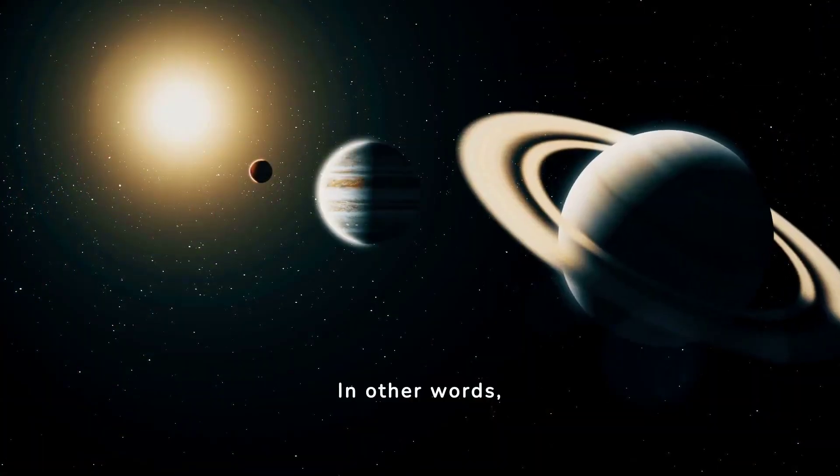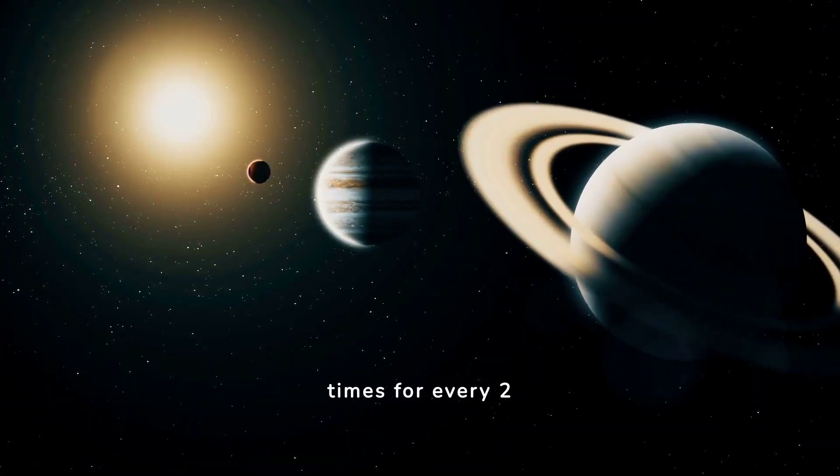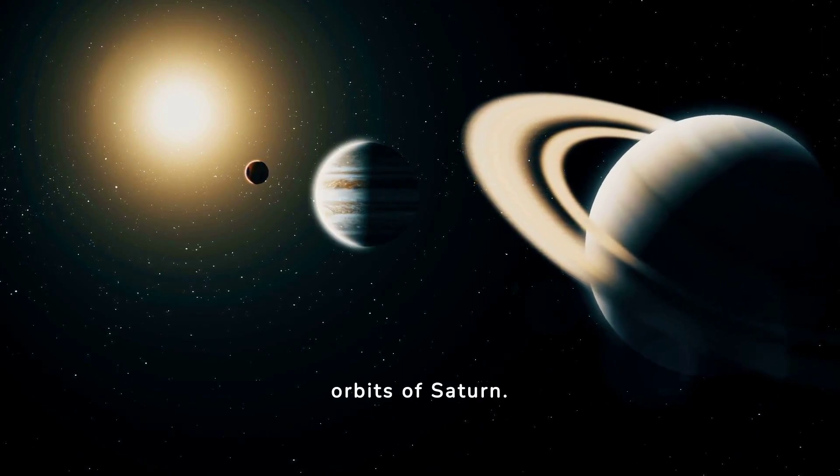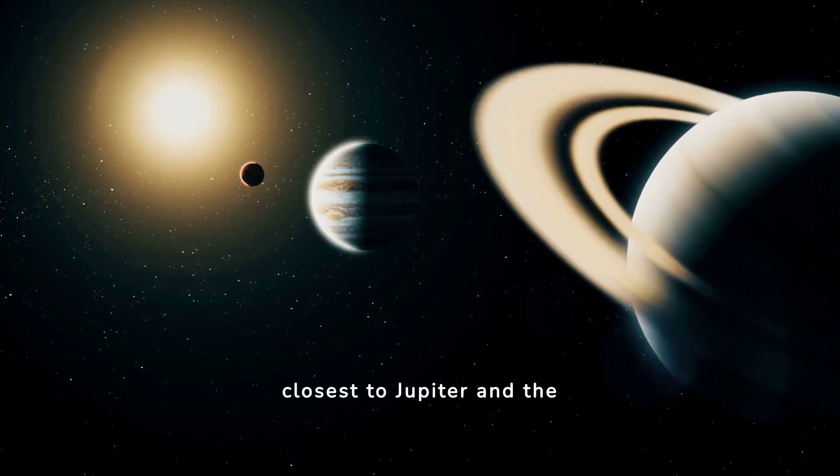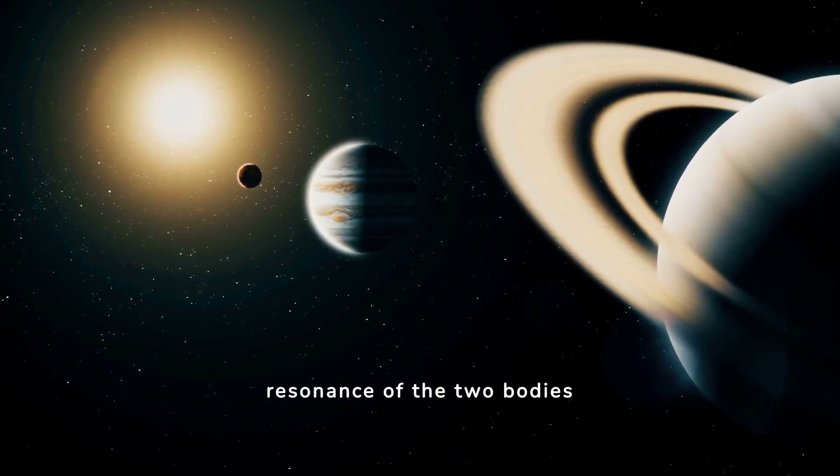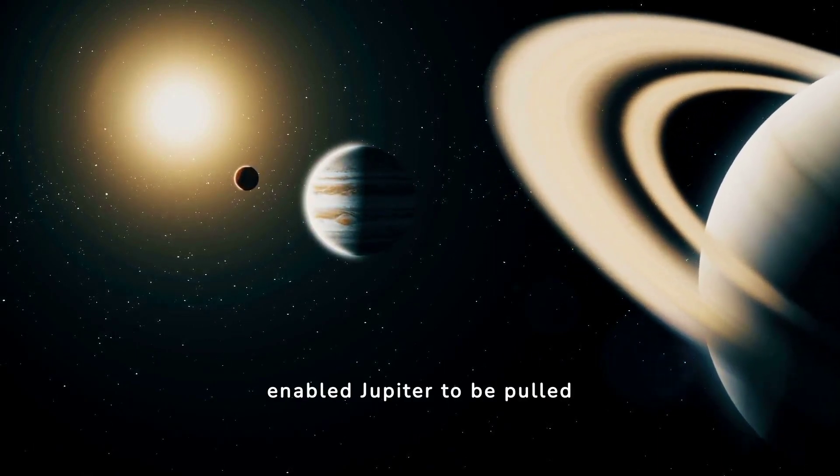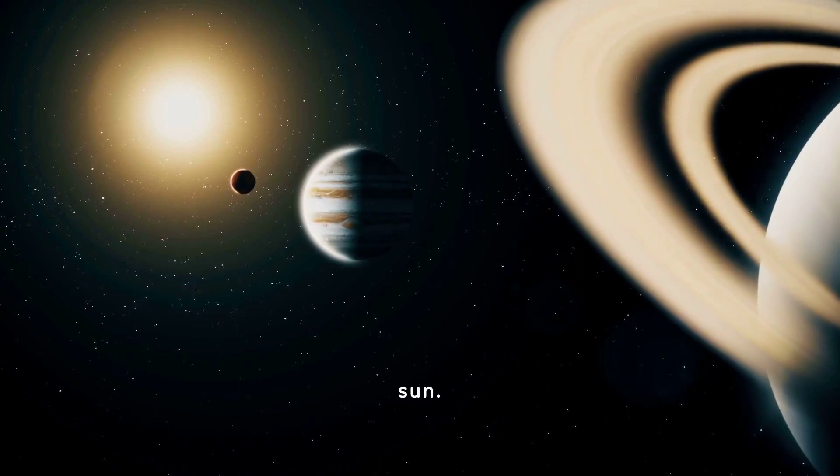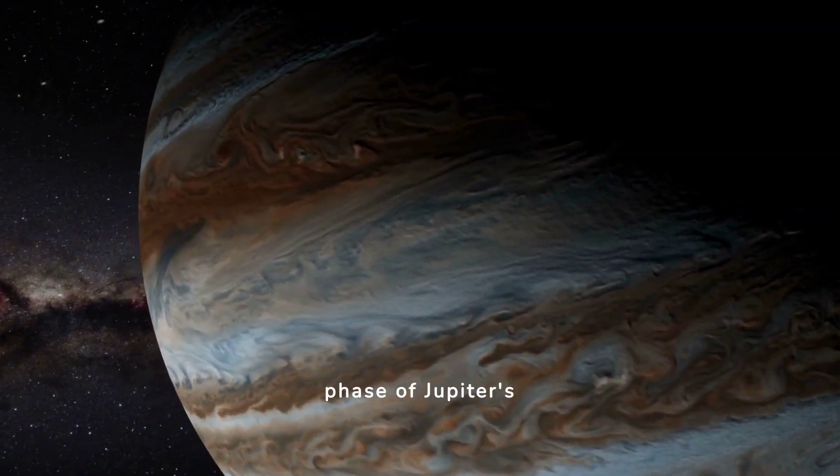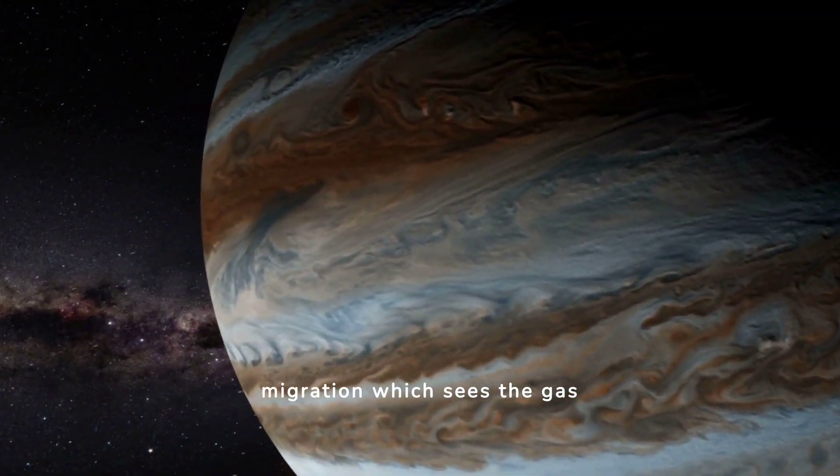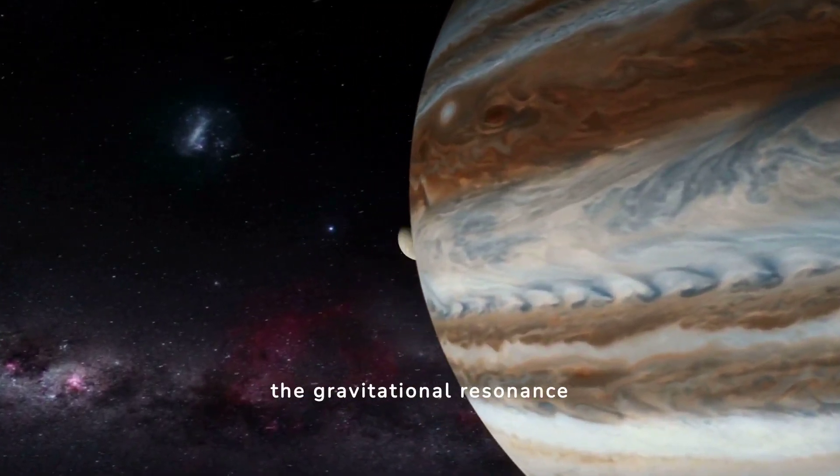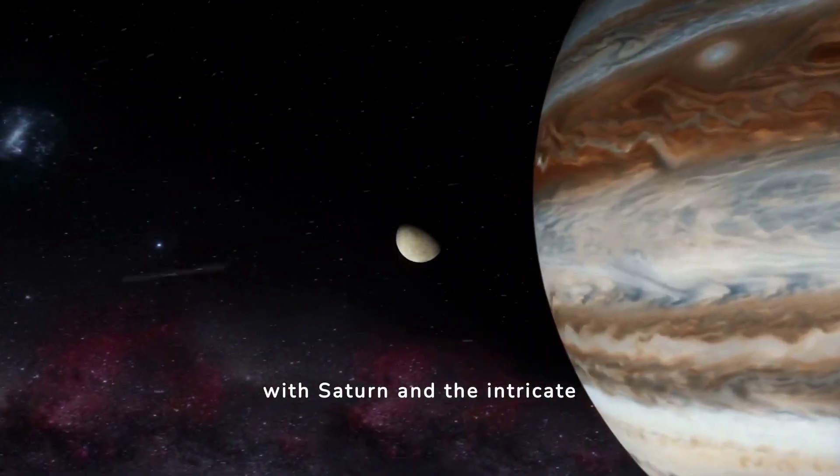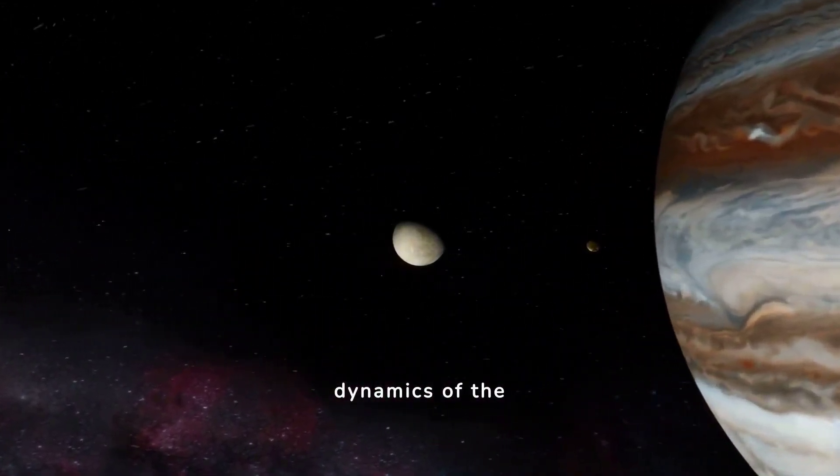In other words, Jupiter orbits the Sun three times for every two orbits of Saturn. The pivotal moment occurred when Saturn was closest to Jupiter, and the resonance of the two bodies enabled Jupiter to be pulled from its spiral toward the Sun. This began the second phase of Jupiter's migration, which sees the gas giant embarking on an outward journey, propelled by the gravitational resonance with Saturn and the intricate dynamics of the surrounding gas disk.